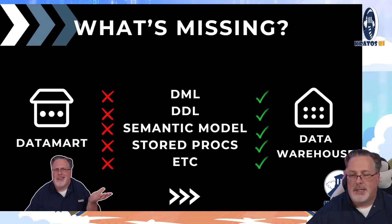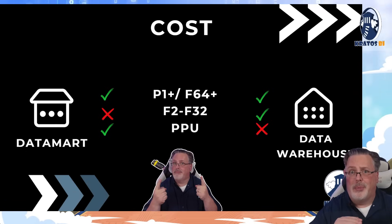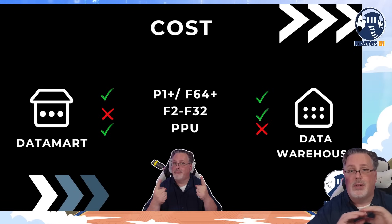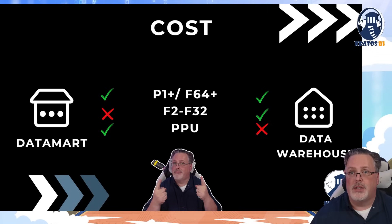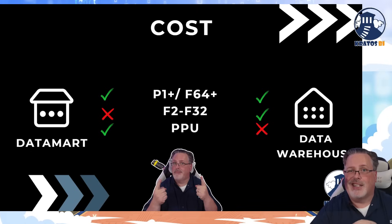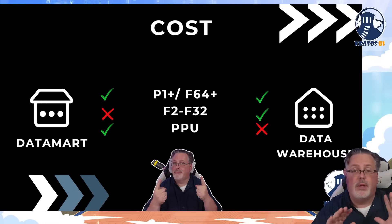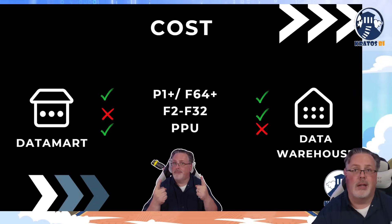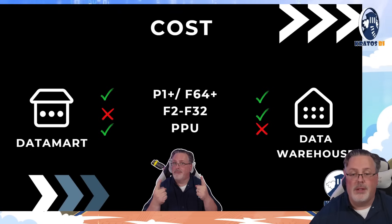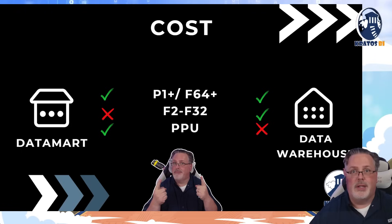So what's preventing people from moving over? Maybe it's cost. If you're on a P1 or an F64 or higher, you could totally switch — just move whatever you have in a data mart over to a data warehouse and you're good to go. The challenge comes below that: if you have an F2 or an F32, you can set up a warehouse and you're ready to rock. At those lower SKU levels, data marts just aren't available — it has to be a data warehouse.